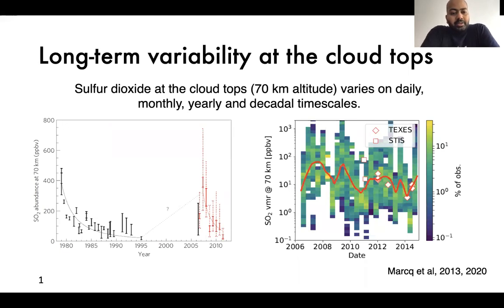Venus cloudtops have been observed on and off since the 70s by spacecraft, by space-based telescopes and ground-based telescopes, and we see that sulfur dioxide abundance at the cloudtops varies by orders of magnitude on all kinds of timescales: daily, monthly, yearly, and decadal.